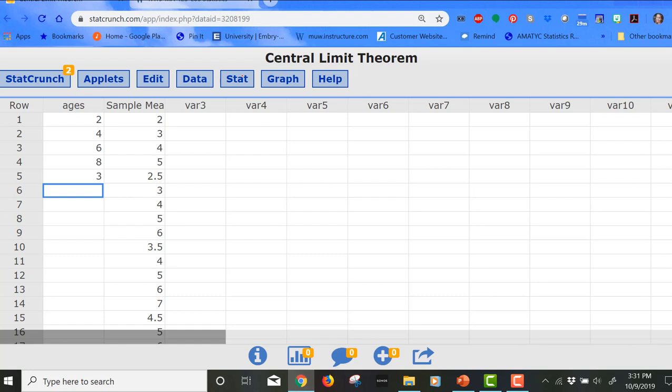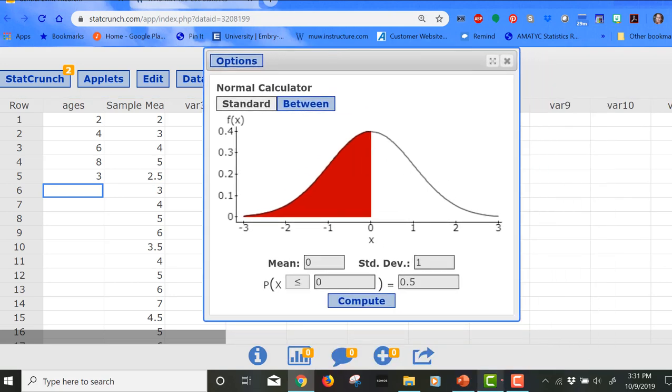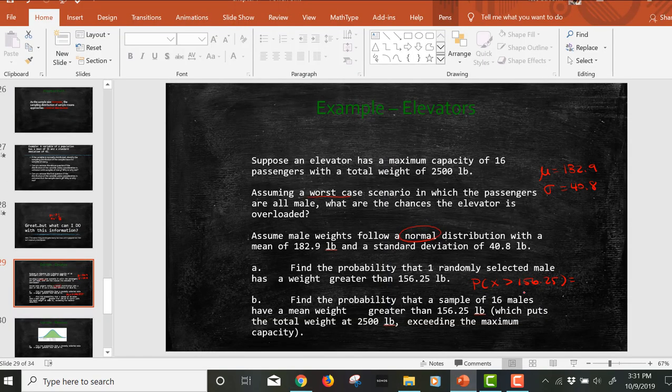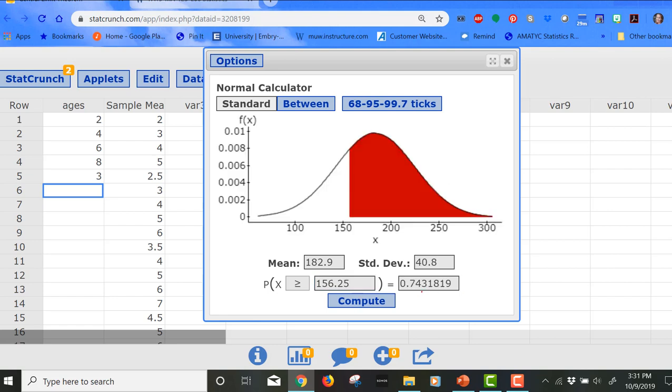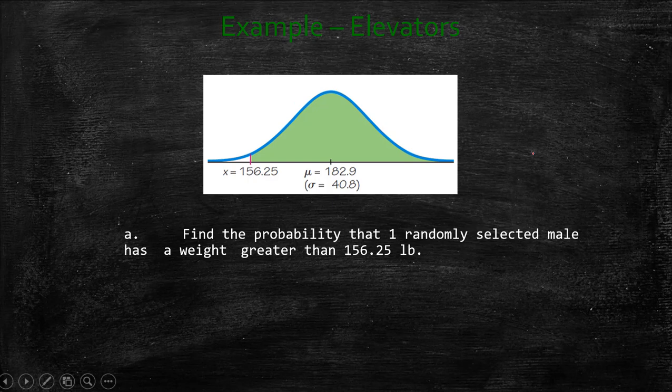I'm going to keep that this time. We go to StatCrunch, right? We go to Stat, and we go to Calculators, and then we go to Normal. So this is exactly what we've been doing up to this point. 182.9 was our mean. Our standard deviation is 40.8. And we're looking for the probability that it's greater than 156.25. So x is greater than 156.25. So hopefully I got all those numbers in correctly. And I see my probability is 0.7432. So about 74% of men, one man, right? The chances are that he'd weigh more than 156.25 pounds.